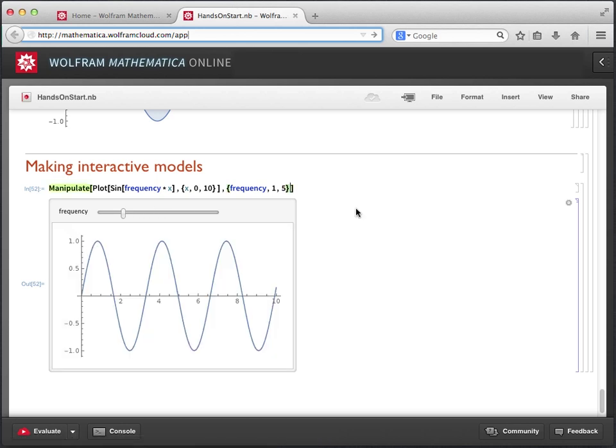Let's make our model a little more interesting by introducing a new parameter. This time, let's add in a symbol called phase, and we'll put that to the right of the x inside of the sine command. So we'll end up with frequency times x plus phase. Since we've added phase as a new parameter, we need to give it a range of possible values.